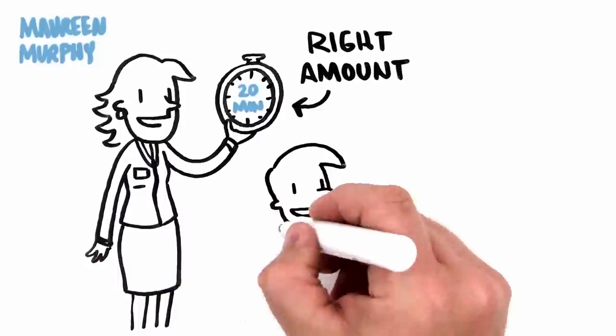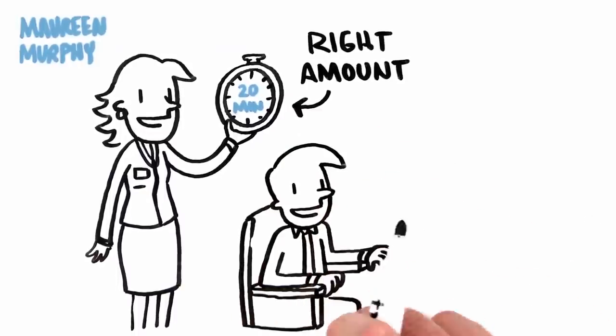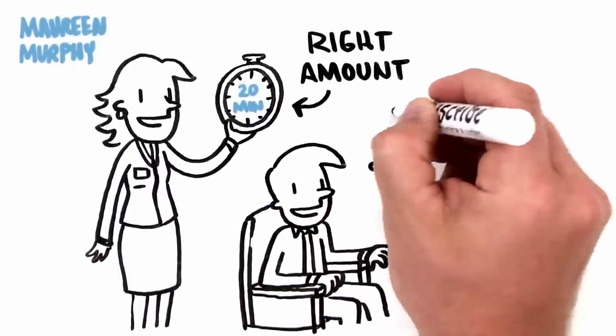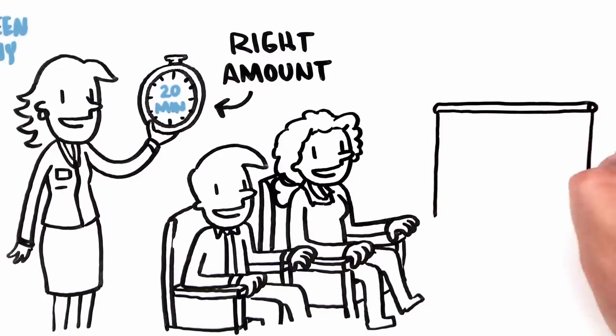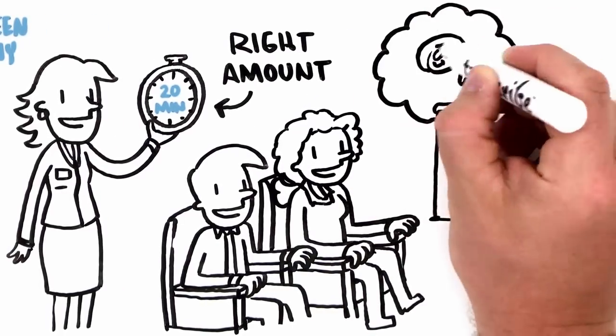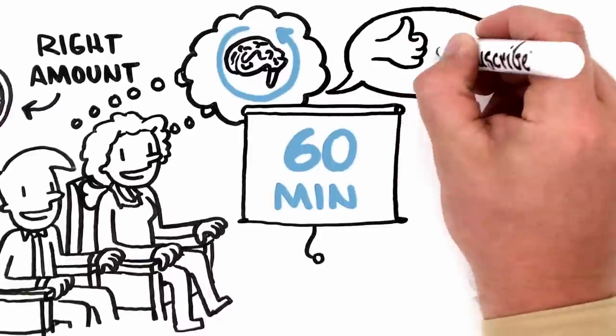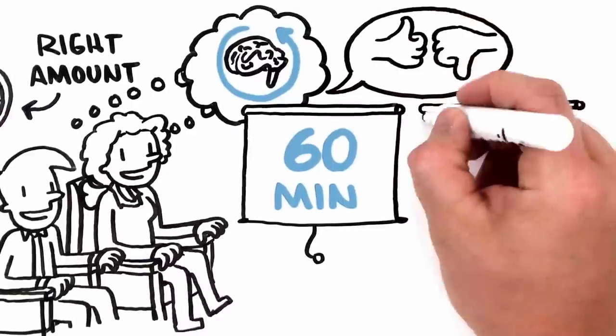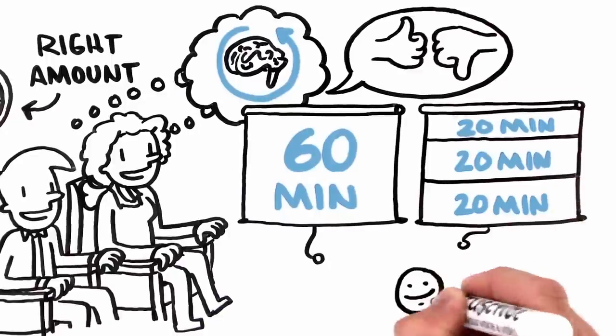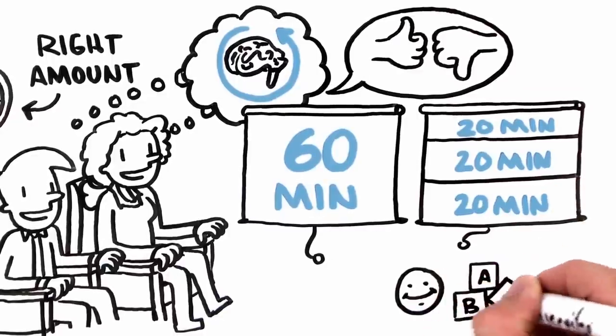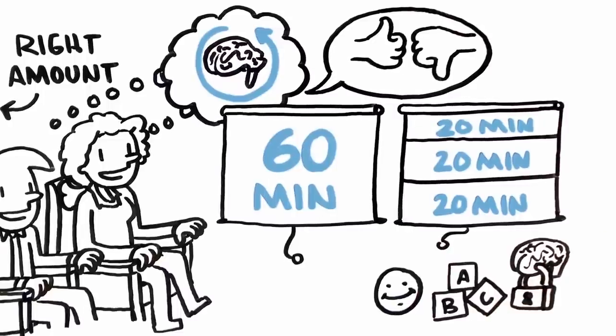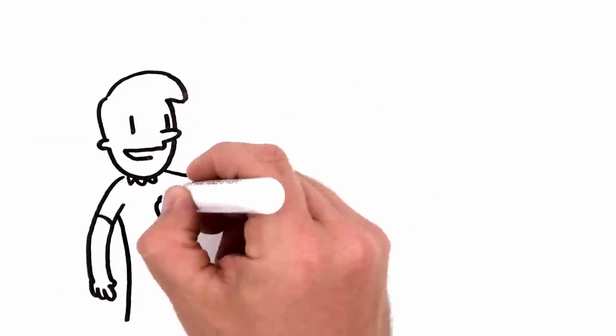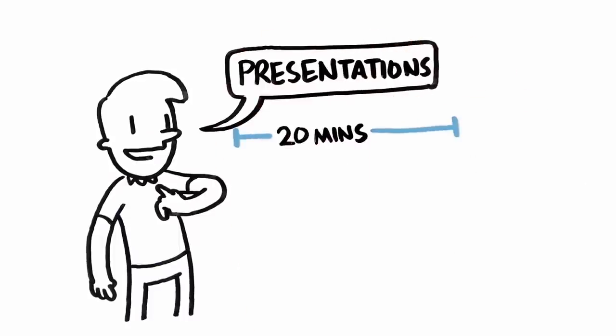She had adults attend a 60-minute presentation and the same presentation broken up into 20-minute chunks. She wanted to see if there would be a difference in people's memory of the talk and also their reaction to the talk. When the presentation was chunked into 20-minute segments, people enjoyed the presentation more, they learned more, and they retained the information longer.